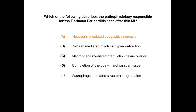Choice B, calcium-mediated myofibril hypercontraction, is responsible for ventricular arrhythmia seen within 24 hours of a myocardial infarction. When myofibrils are hypercontracting out of order and out of sync, that causes an arrhythmogenic response in the cardiac tissue. It happens because too much calcium flows in, causing the hypercontraction — so choice B is for ventricular arrhythmia due to myofibril hypercontraction.